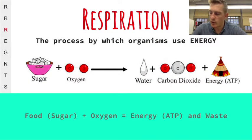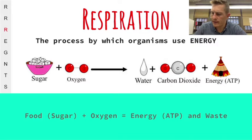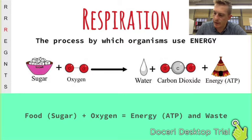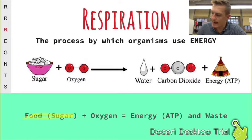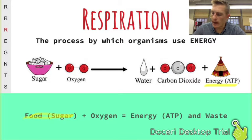Respiration is the process by which organisms convert the energy found in food — referred to as sugar in this class — into a usable form. The usable form of energy we'll be talking about is ATP. At the end of the day, respiration is really all about energy.